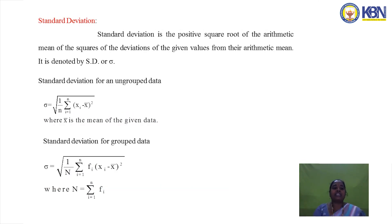The last method is standard deviation, which is the positive square root of the arithmetic mean of the squares of deviations from the arithmetic mean, denoted by σ. For ungrouped data, σ = √[1/n × Σ(xi − x̄)²], where x̄ is the mean and n is the number of observations.